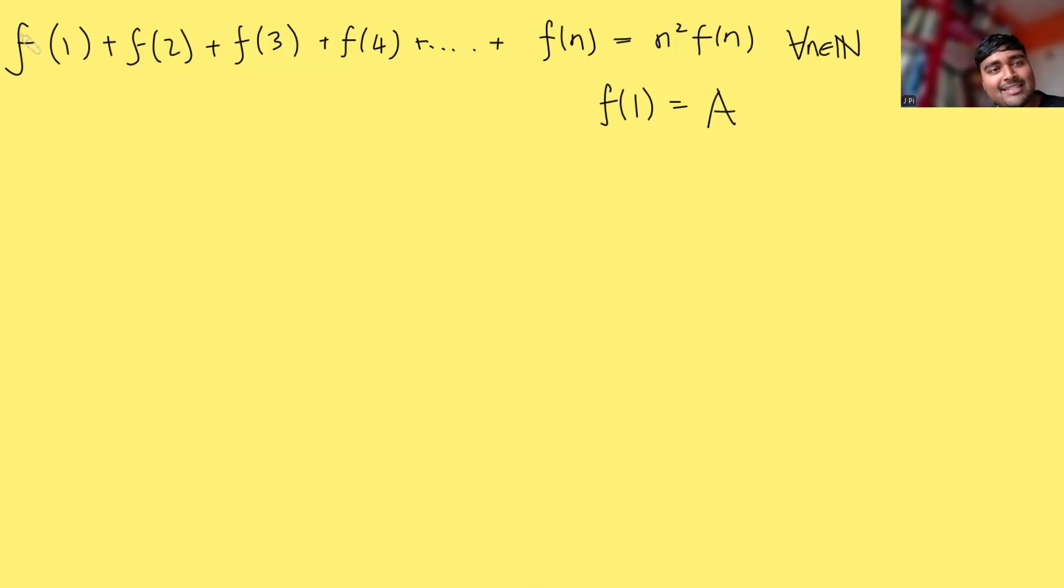Well what we're going to do is we're going to take this equation up here and we're going to replace the n's with n minus 1. So we're going to get f(1) + f(2) and so on all the way up to f(n-1). This thing here is going to be (n-1) squared times f(n-1).